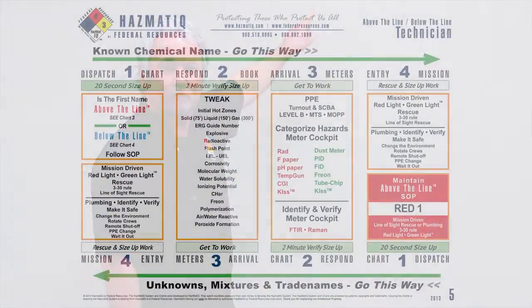You'll need your books and charts to work the process. We do this so you can practice and stay proficient using this system. The system is a four-step system: step one is size up; step two is verification using the book; step three, we dress in the correct PPE and equip ourselves with the right meters; step four, we go downrange and do it safely.